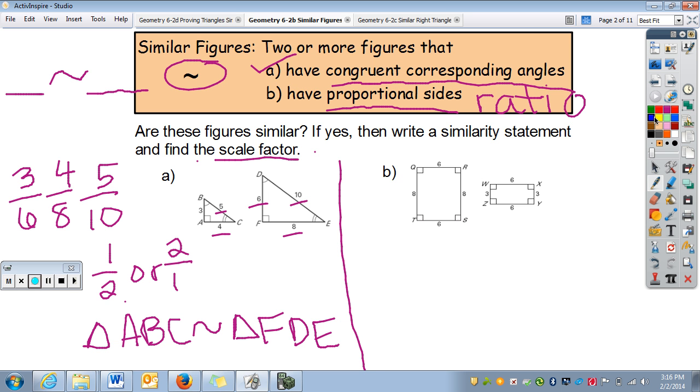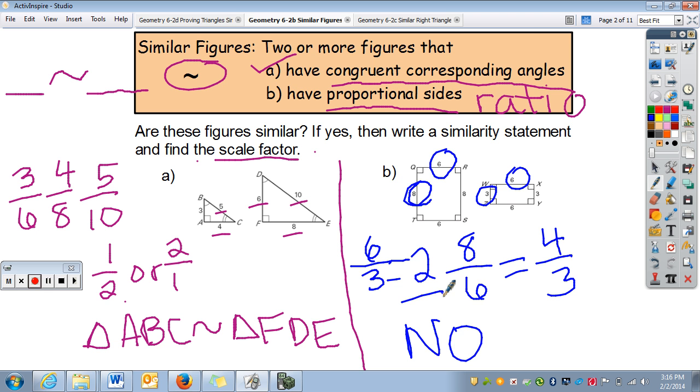Let's look at this one right here. I have all my angles congruent. They're all 90 degree angles, so we are good there. Then I need to figure out my sides. I have six. Six is the small side, so I have to go with three. Six divided by three, which is two, is that the same as my two bigger sides? Eight divided by six simplifies down to four-thirds, where this simplifies down to two. No, they are not. They do not have the same ratio or scale factor.